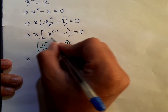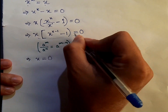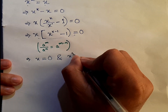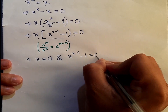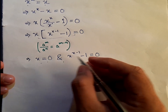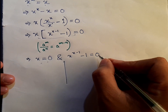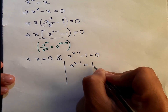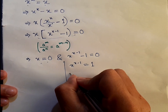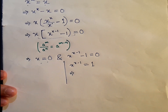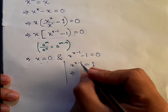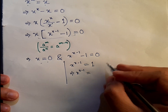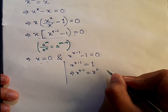After factoring, we get two parts: x equals 0, and x to the power x minus 1 minus 1 equals 0. Solving the second part, x to the power x minus 1 equals 1, which we can rewrite as x to the power x minus 1 equals x to the power 0.